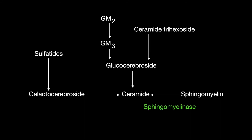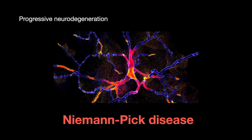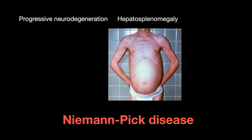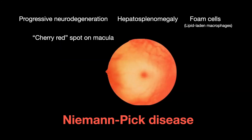Sphingomyelinase catalyzes sphingomyelin to ceramide, and a deficiency causes sphingomyelin to build up. This disease is called Niemann-Pick disease. It is characterized by progressive neurodegeneration, hepatosplenomegaly, foam cells which are lipid-laden macrophages, and a cherry red spot on the macula.